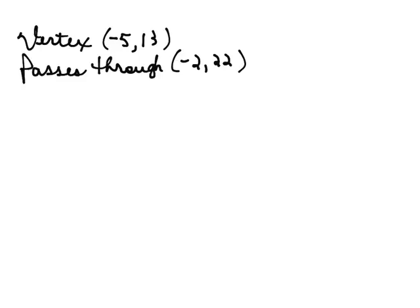We're asked to write the equation for a parabola. We know that the vertex of the parabola is (-5, 13) and the parabola passes through the point (-2, 22).